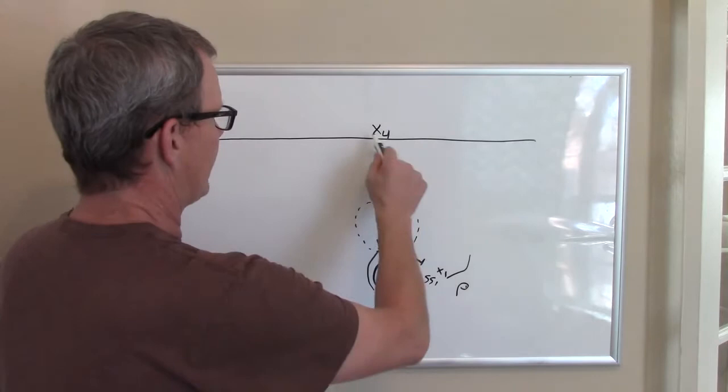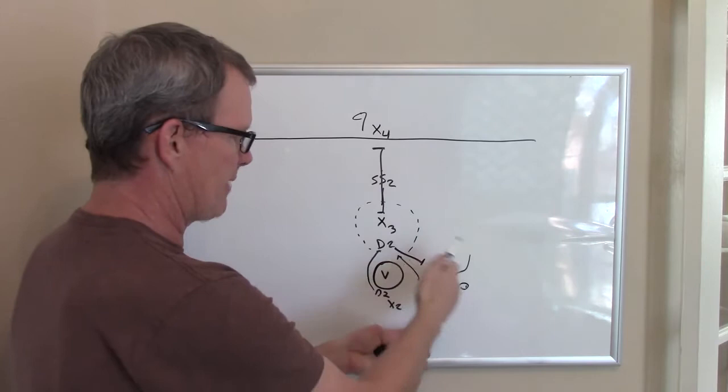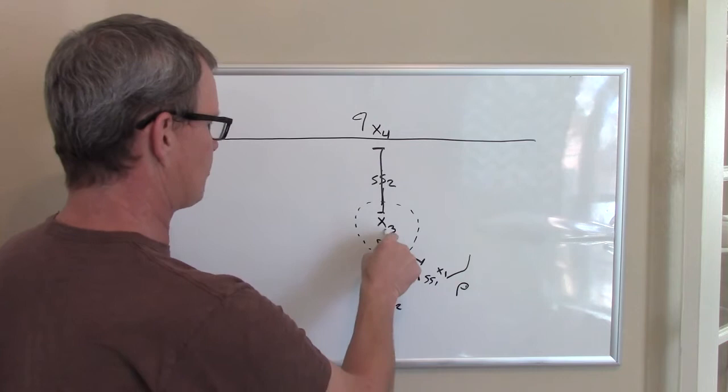Then when X4 gets the ball, short stick 2 is going to have to make a really tough approach. And we don't know who the slider is going to be—it sort of depends on what happens with the slide and recovery—but often times, it's short stick 1 sprinting back in that becomes the slider.